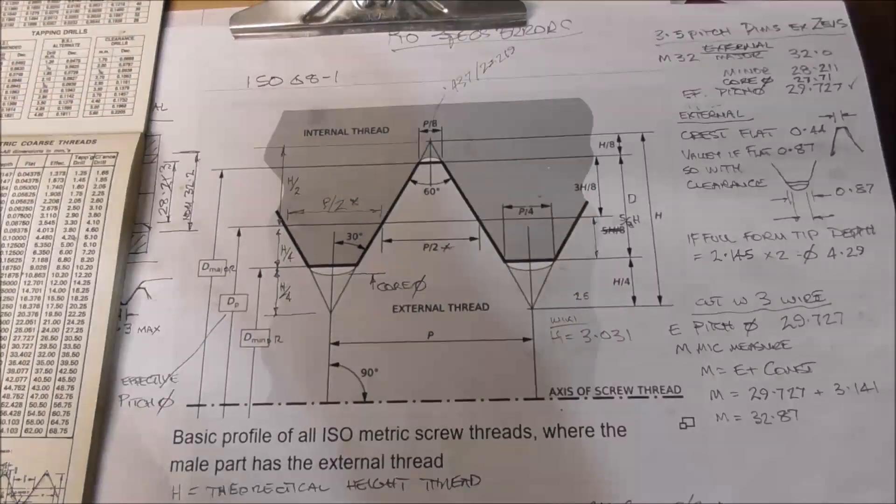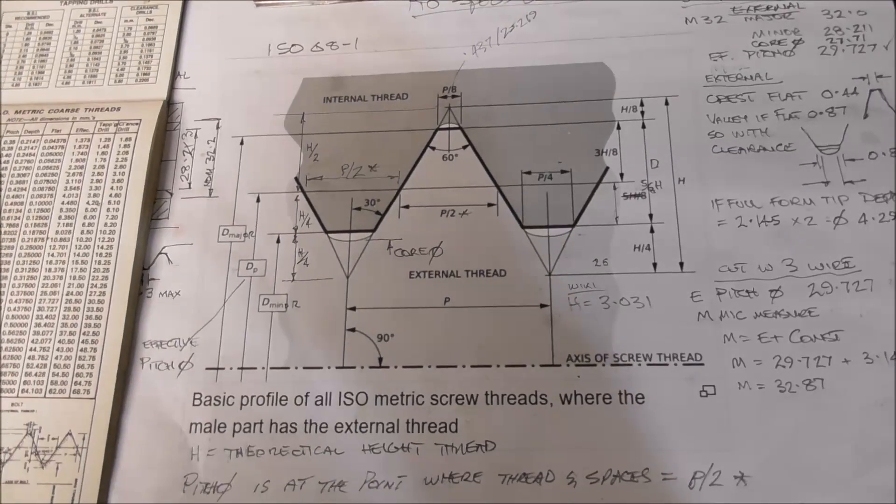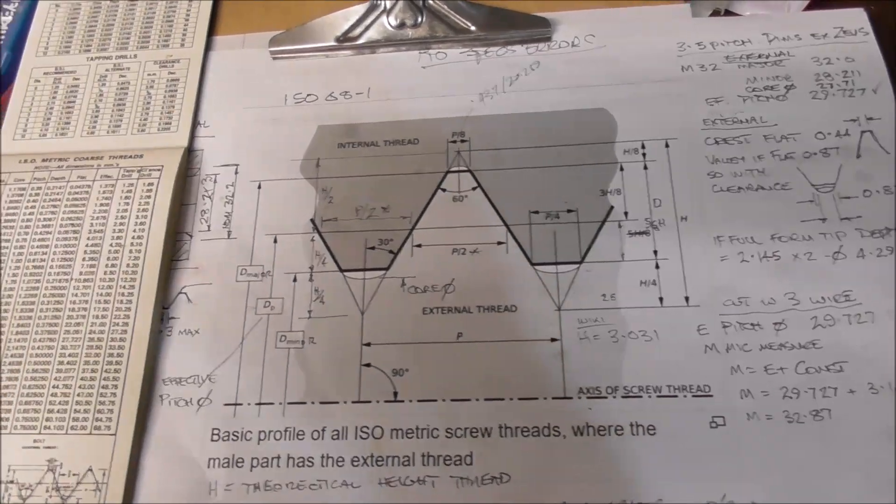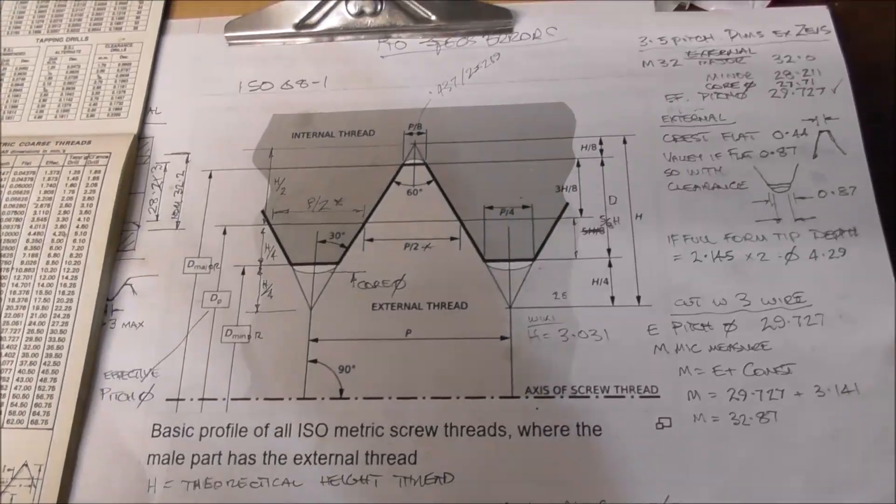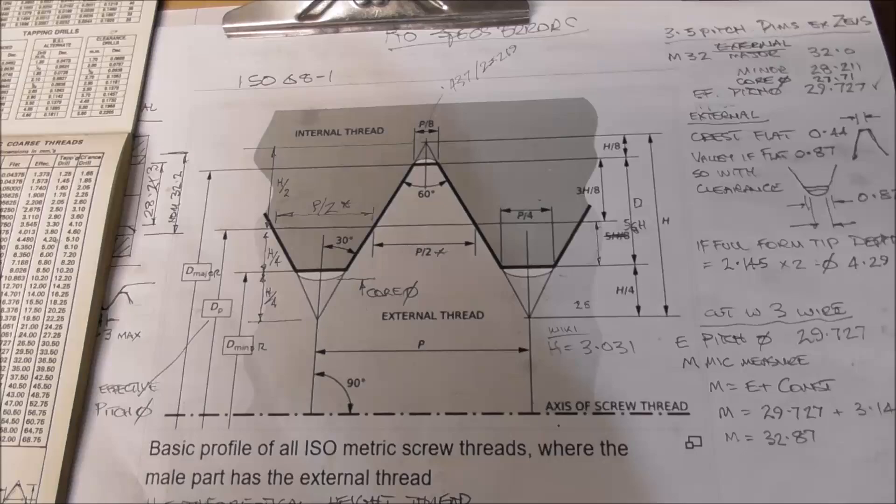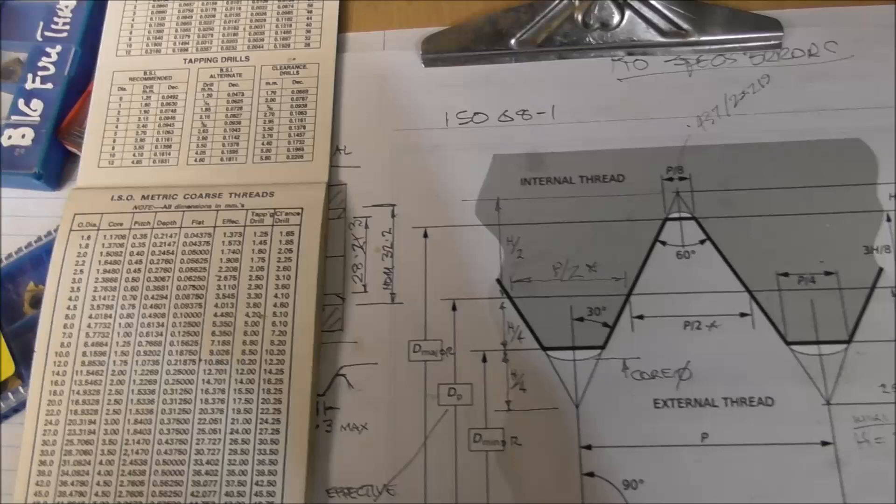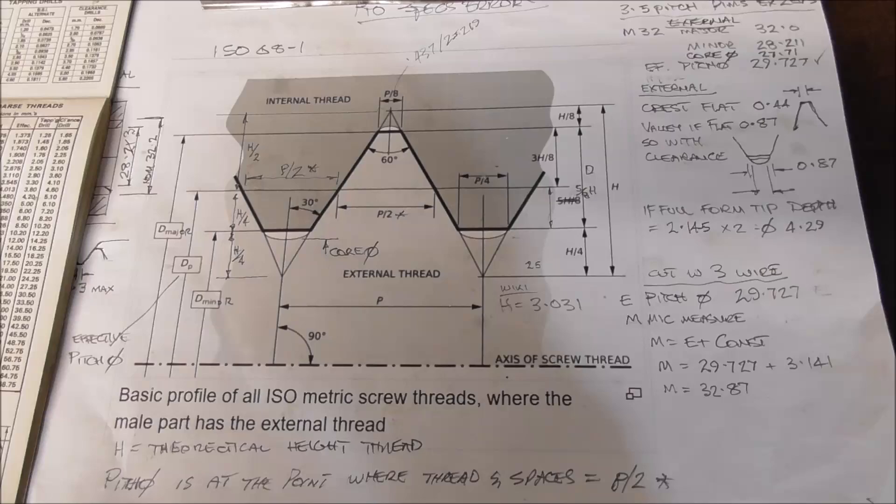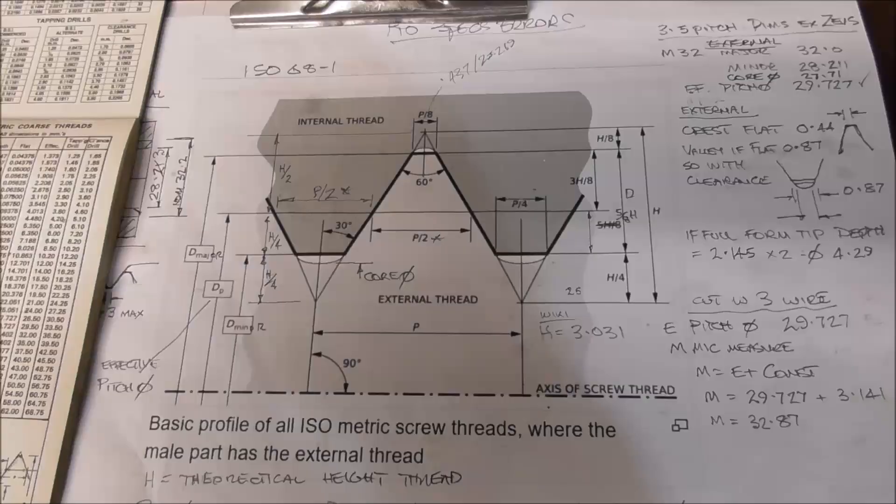When you're cutting threads to specifications, especially if you're only making the external or the internal thread to fit somebody else's or existing part in a different area, be careful that you're using the same specifications. I've come unstuck in the past using an old Machinery Handbook to get metric threading specs. And there may be other discrepancies within specifications, so just be aware that potential for a disaster.